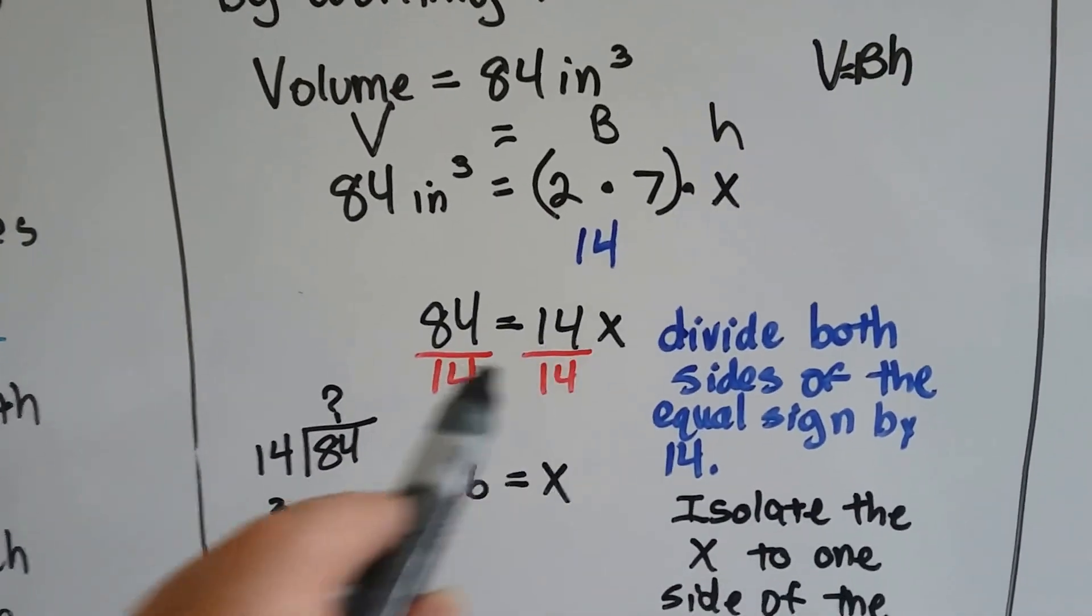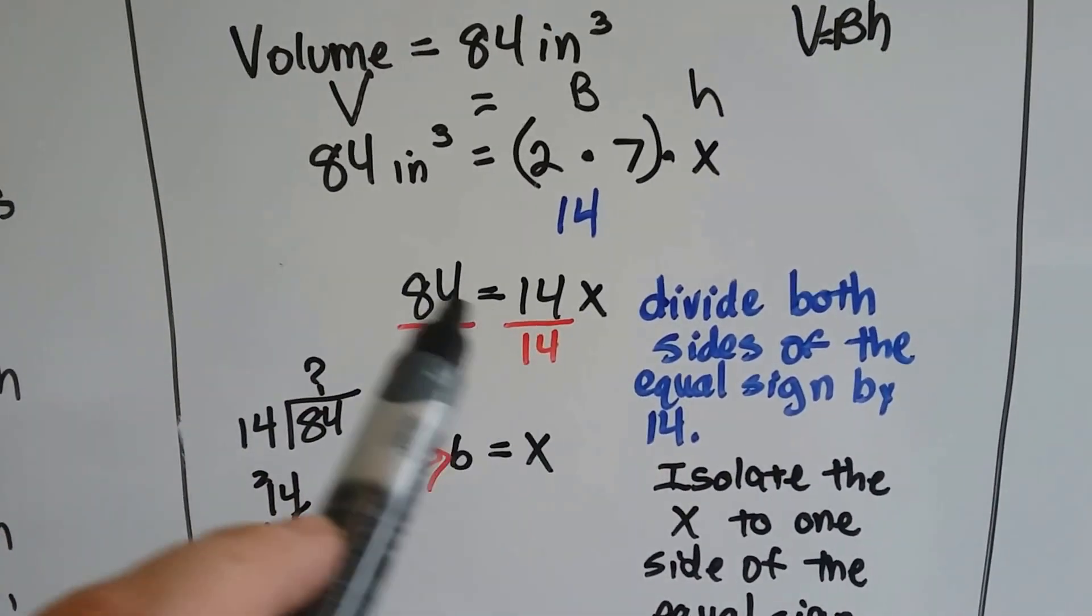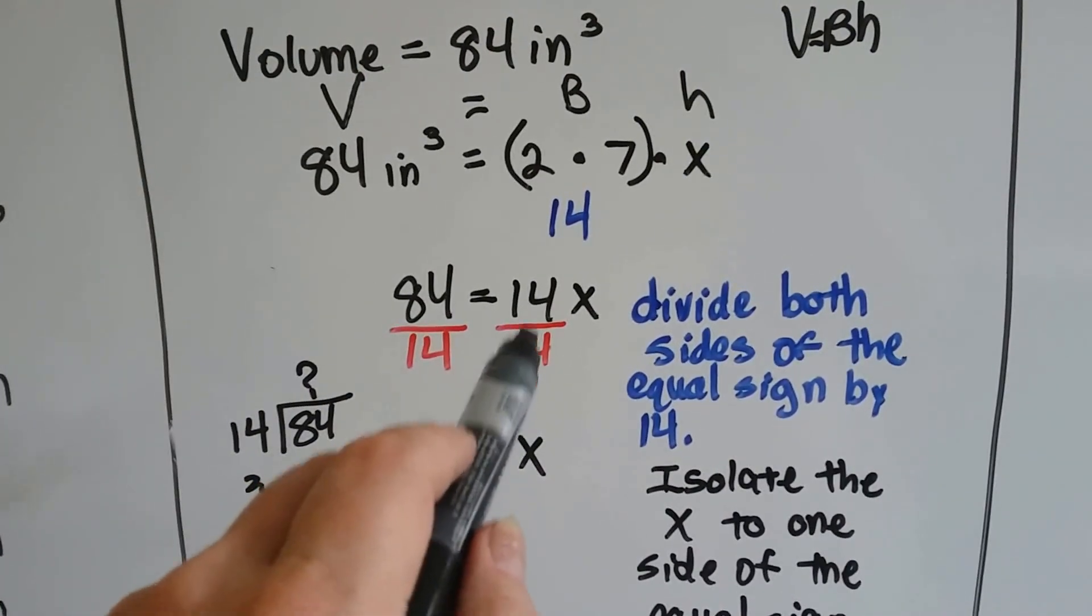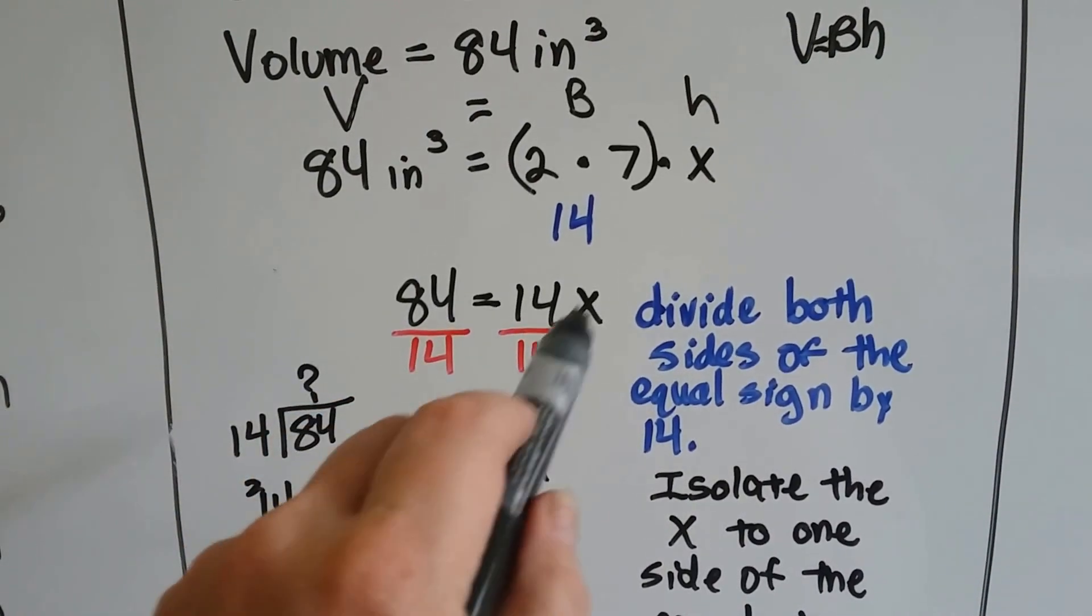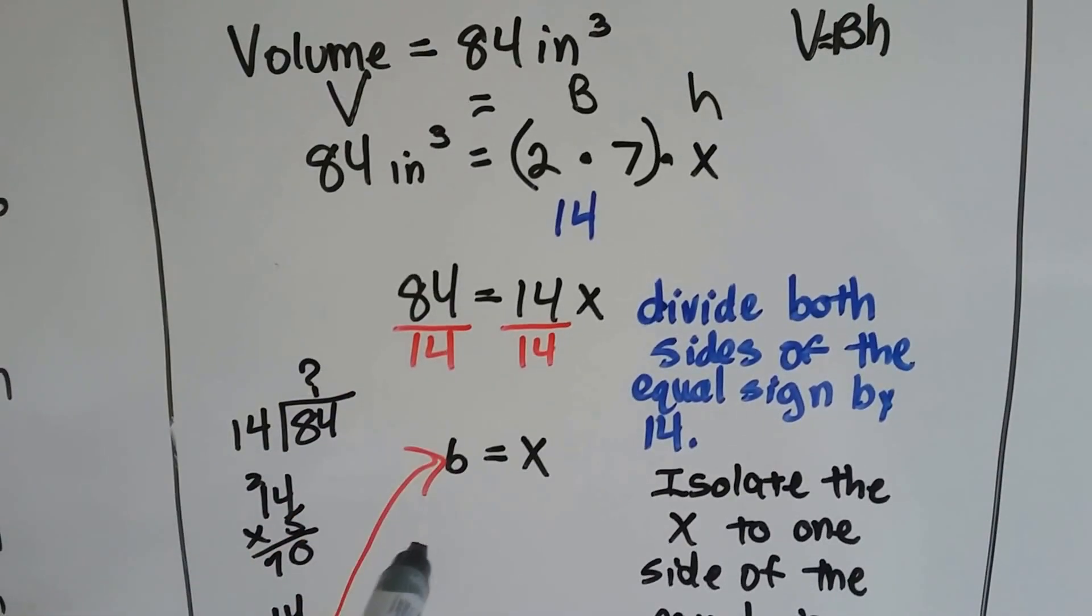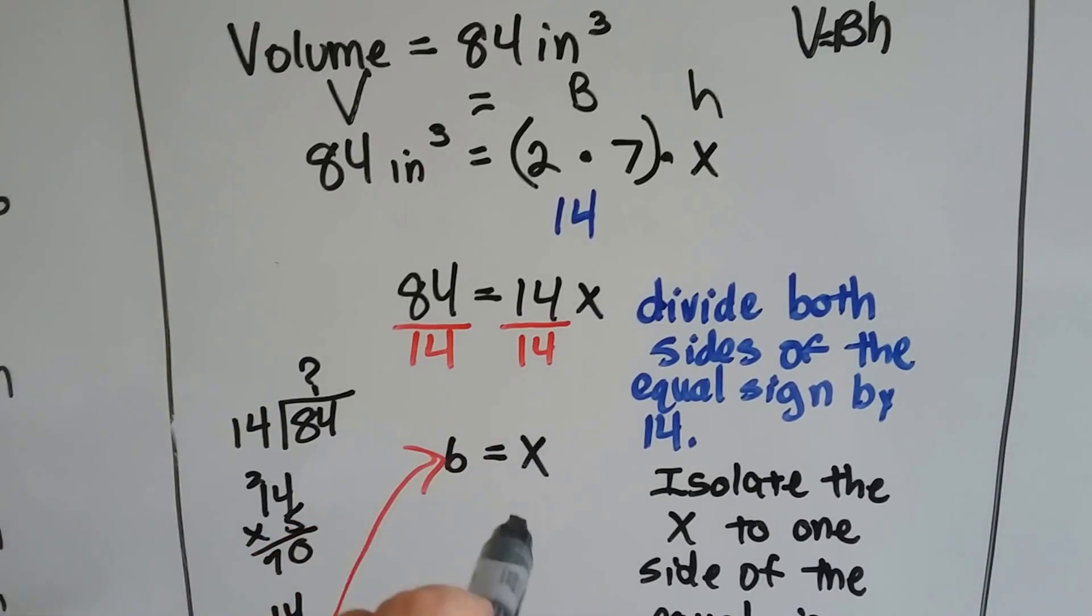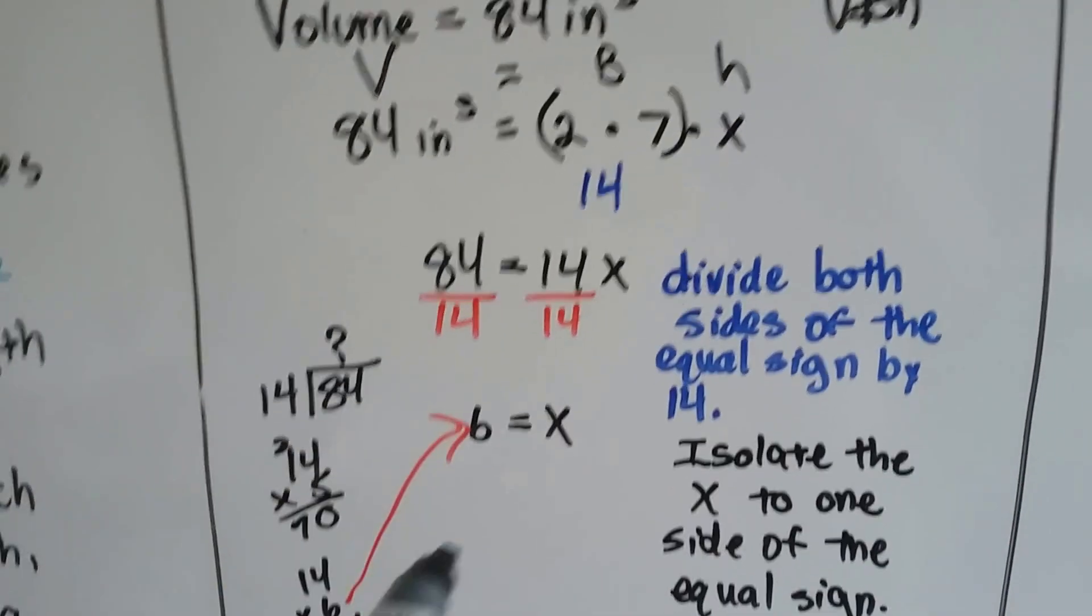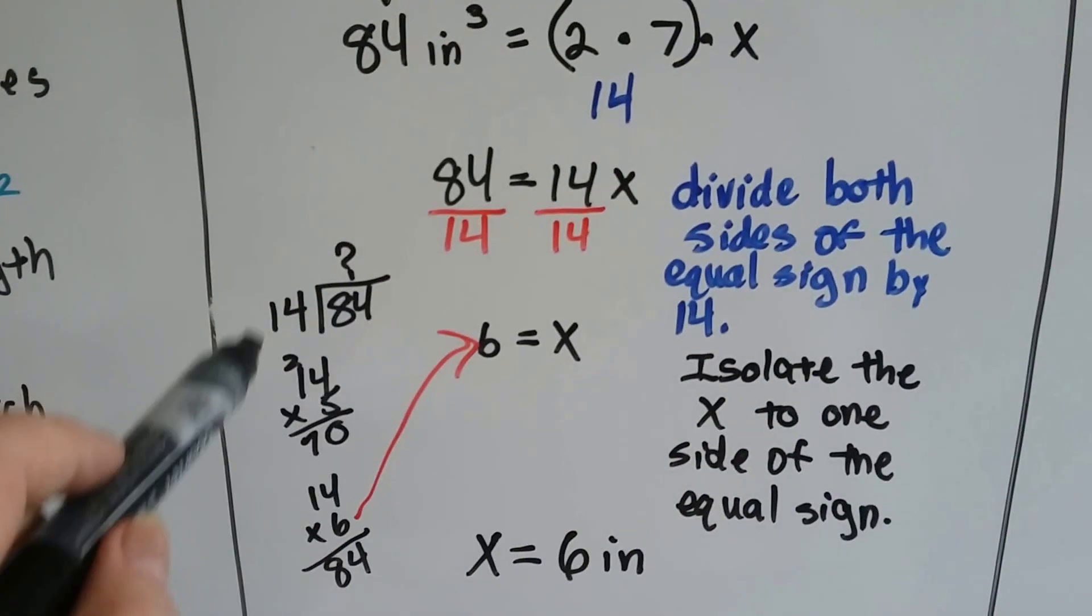We divide both sides of the equal sign by the 14. What happens is it turns this 14 over 14 into a 1, a 1x. We don't put the 1 there, we just know that if there's an x that it's 1x, right?